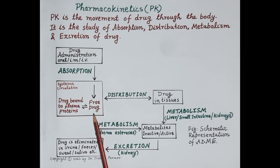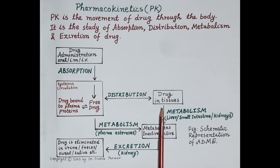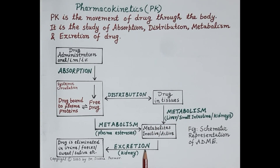The free drug is essential to produce the therapeutic action. From the systemic circulation, the drug is distributed to body tissues, reaches the site of action, binds to its receptors, and produces its therapeutic effect. The drug is also distributed to other body tissues.